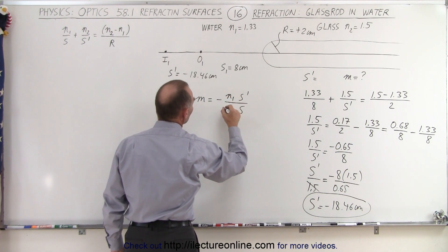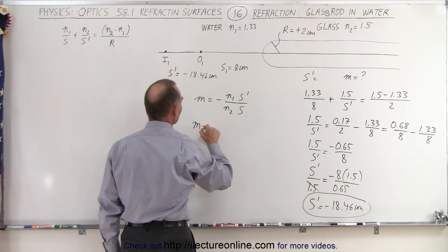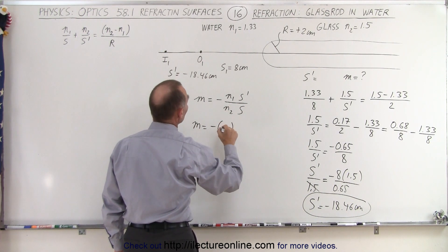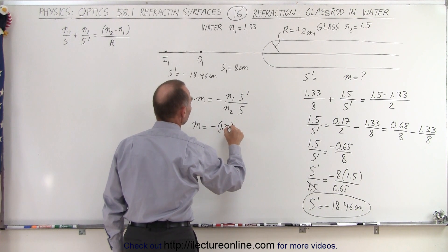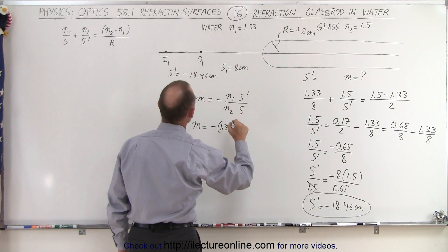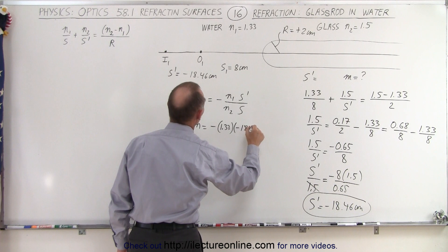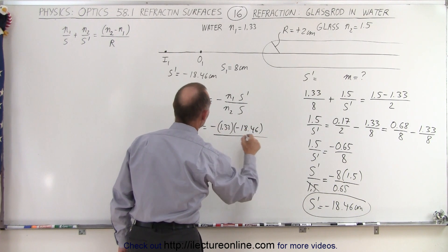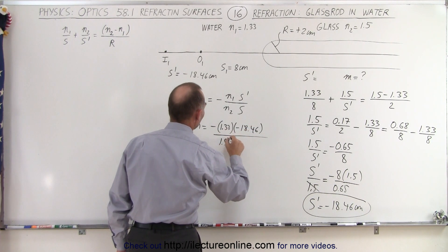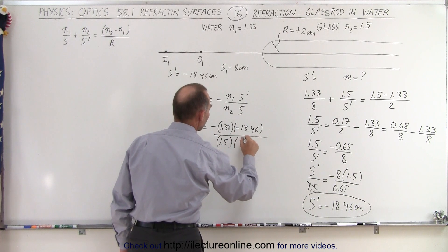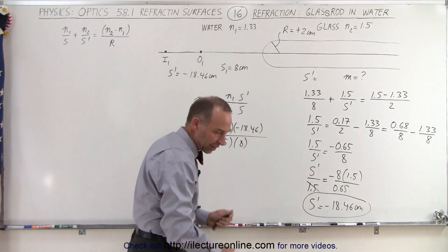So the magnification is equal to minus n1, which is 1.33, times s prime, which is minus 18.46, divided by n2, 1.5, and s was 8. So let's see what that's equal to.